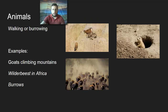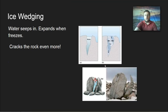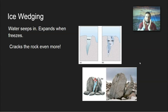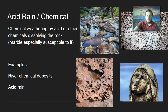Ice wedging is a process that happens when there's a tiny crack in rock and water seeps inside. When water freezes it expands, so during winter, if water gets inside a crack and then expands, it actually cracks the rock even further, leaving fractured rock behind.